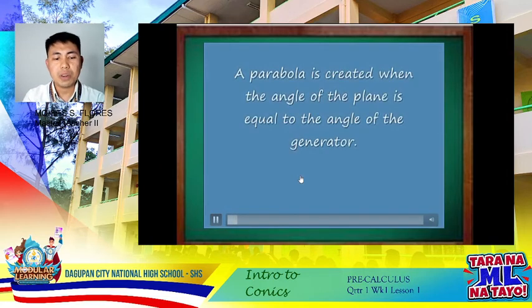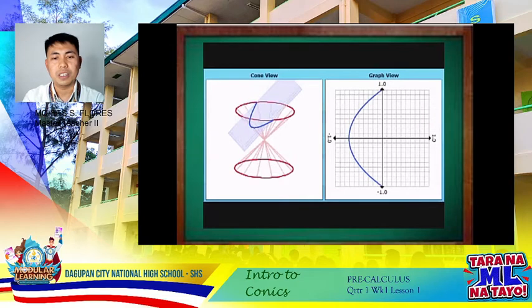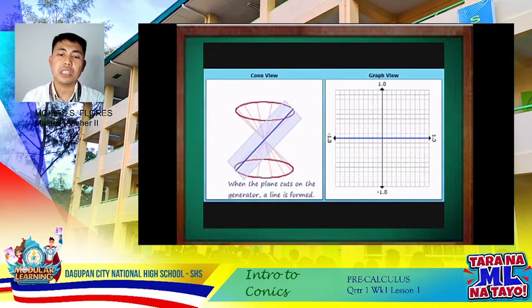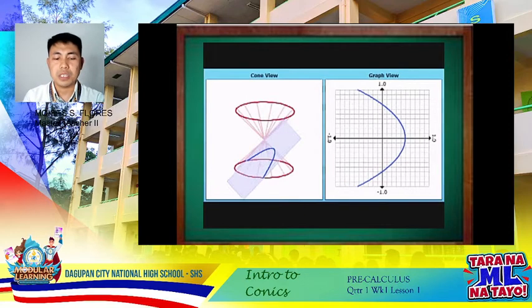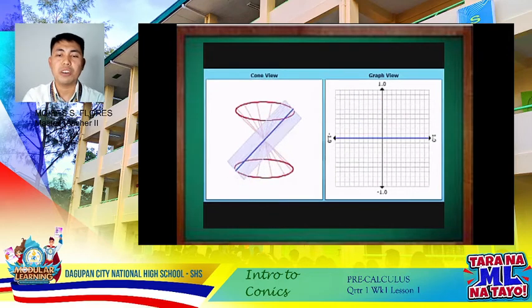A parabola is created when the angle of the plane and the cone are equal. Observe the plane as it moves on the cone. The parabola degenerates into a line once it reaches each generator. So for a parabola, its degenerate case is a straight line.